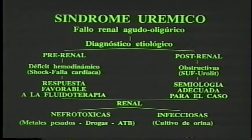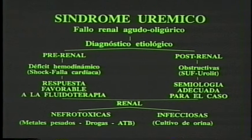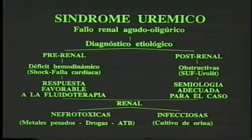En el siguiente cuadro entramos directamente en el estudio de las enfermedades productoras de síndrome urémico: más específicamente, el fallo renal agudo, caracterizado como oligoanúrico, y el fallo renal crónico, caracterizado por una marcada tendencia poliúrica. Vamos a ver primero el agudo u oligúrico. Precisar el diagnóstico etiológico es importante para este tipo de fallo porque la terapéutica a implementar, de acuerdo al origen, es sustancialmente diferente. El fallo renal agudo de tipo oligúrico y de origen pre-renal es producido por todas aquellas afecciones que provoquen hipotensión sistémica.